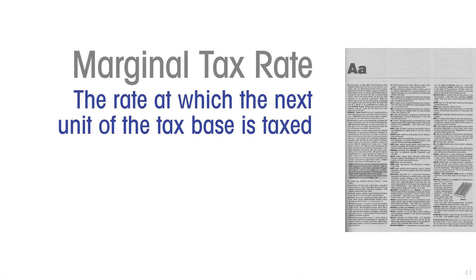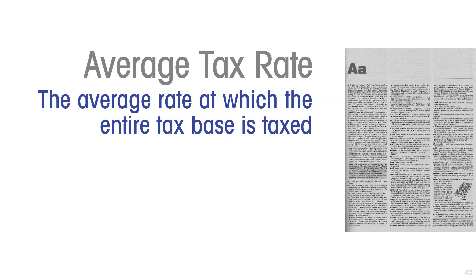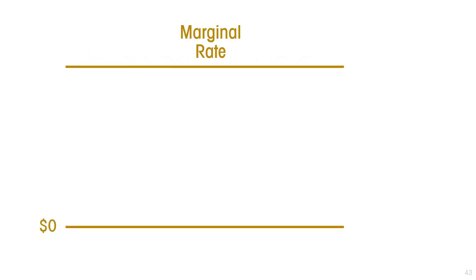The marginal tax rate is the rate at which the next unit of the tax base is taxed. The average tax rate is the average rate at which the entire tax base is taxed. Let us use an example from income tax to illustrate this difference between the marginal tax rate and the average tax rate.